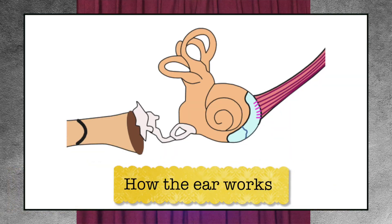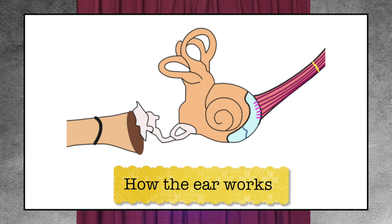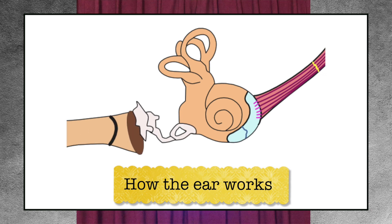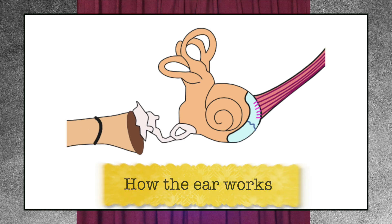Sound waves hit the eardrum, and it vibrates the bones that send waves through the fluid in the cochlea, which causes the hair cells to wave, which sends a signal through the cochlear nerve to the brain.